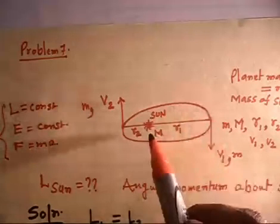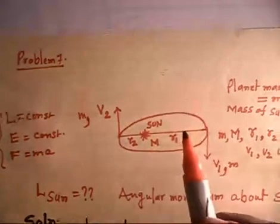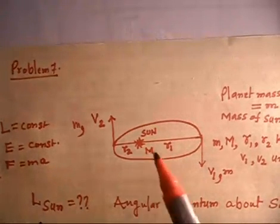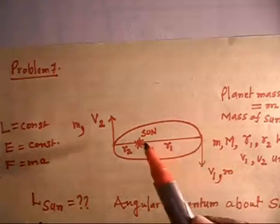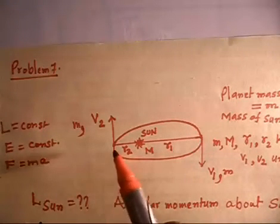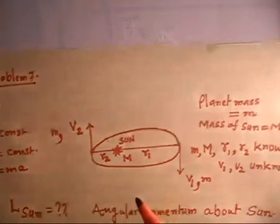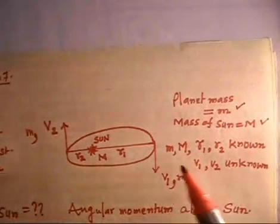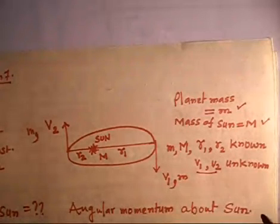Now let us discuss this problem. I have a planet moving around the Sun. The Sun has mass M, and the planet moves in an elliptical path. I simply need to apply energy conservation and angular momentum conservation. The nearest distance from the Sun is r2, the farthest distance is r1. At the nearest distance the velocity is v2, and at the farthest distance the velocity is v1.